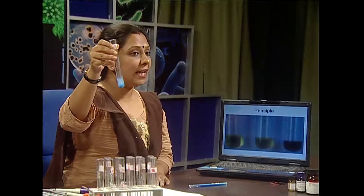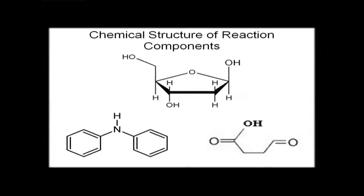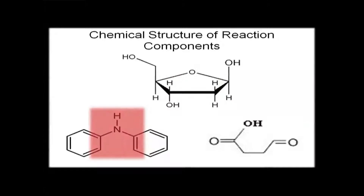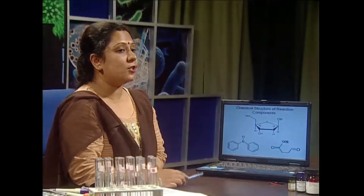And this omega-hydroxylavalulinic aldehyde along with diphenylamine reagent develops an intense blue coloration, which can be measured at around 595 nanometers by spectrophotometer. This is the reaction scheme where by acid treatment, the deoxyribose sugar is hydrolyzed, omega-hydroxylavalulinic aldehyde is produced, and along with DPA reagent, it develops an intense blue coloration. The key players are deoxyribose, diphenylamine reagent, and hydroxylavalulinic aldehyde.